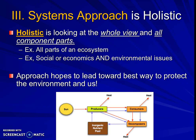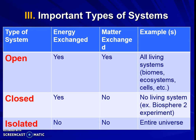If we don't consider this wide, holistic view, it's less likely we'll be able to create solutions to protect the environment. If we only look narrowly, we might miss something; if we think widely and holistically, we're more likely to protect the environment. There are three major types of systems we're going to talk about in this class, and when we discuss them, we think about: is energy coming in and out? Is matter coming in and out? And what are some examples of each type?